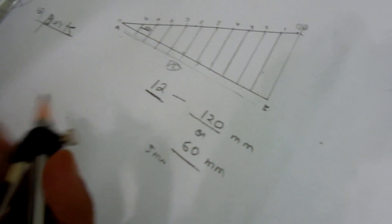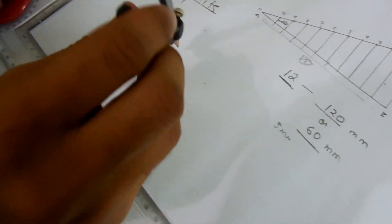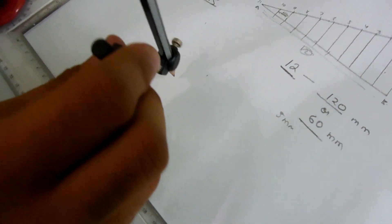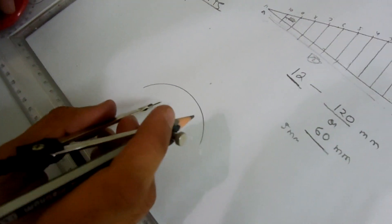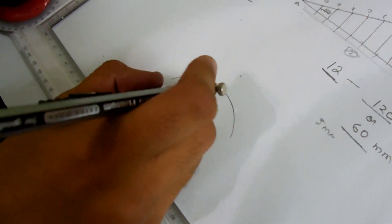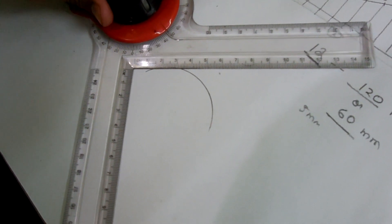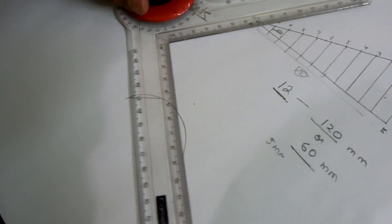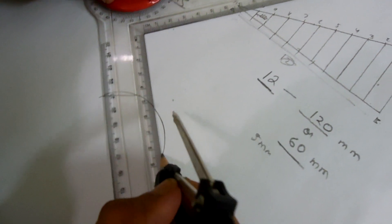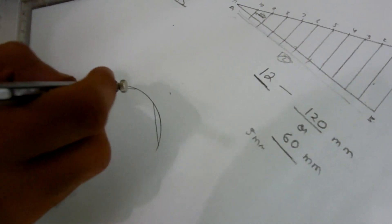Then to locate a center for a given arc, take any arc. We have to locate a center for this arc by making two chords of any length. This will be here and this will be here. Then bisecting the line here.